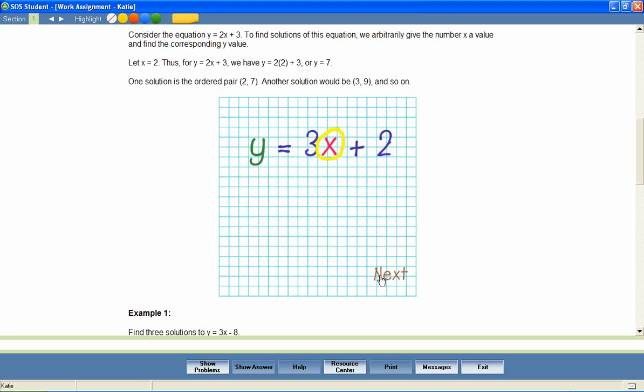To begin, you need to find your ordered pairs. Substitute any number for X and then figure out what Y is. Any number? Well, yes. Positive or negative. But you'll want to keep it small. Remember, you are going to be graphing this.